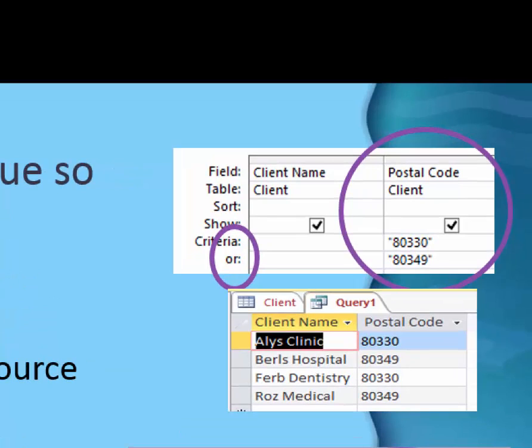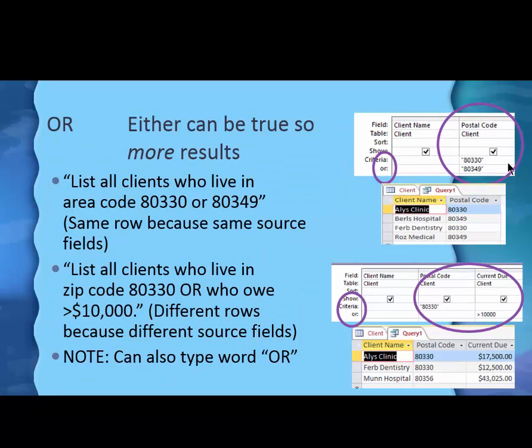It is a little bit confusing, so don't worry if you get confused in the beginning. The way we'll do that is to use the OR row, and we'll write 80330 on one row, and 80349 on the other row, on the line below it. And you can see that in the results, we get both 80330 and 80349, but we did it with an OR. A little bit confusing.